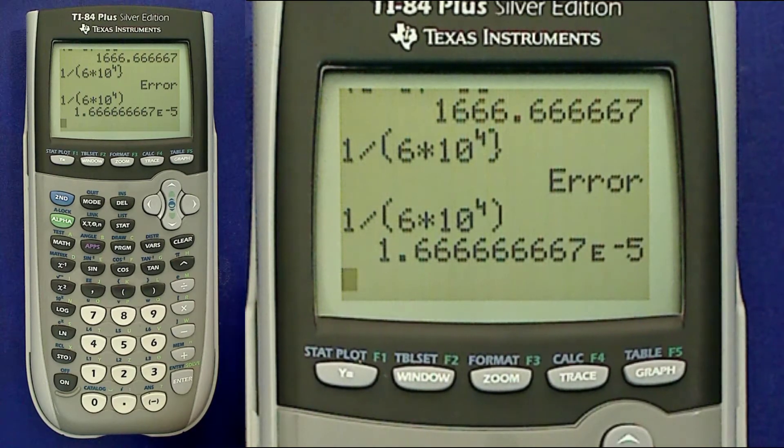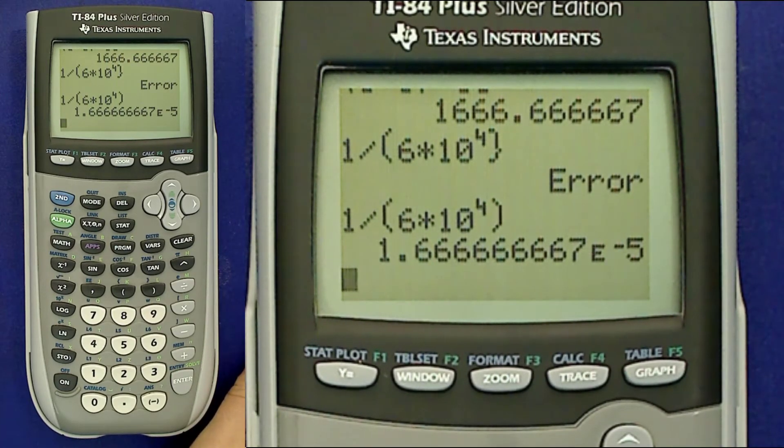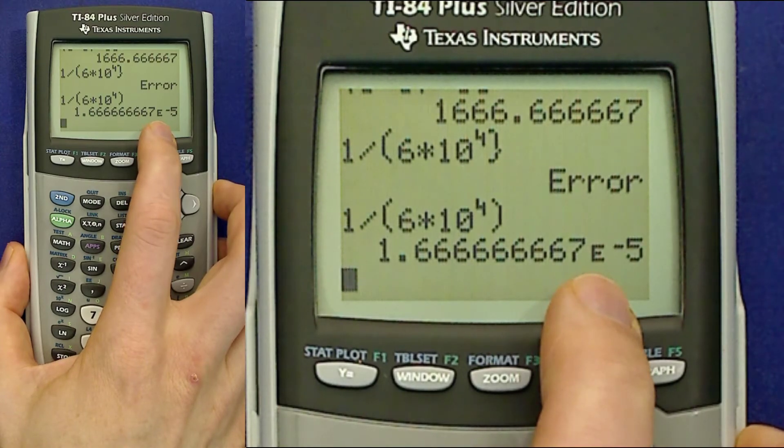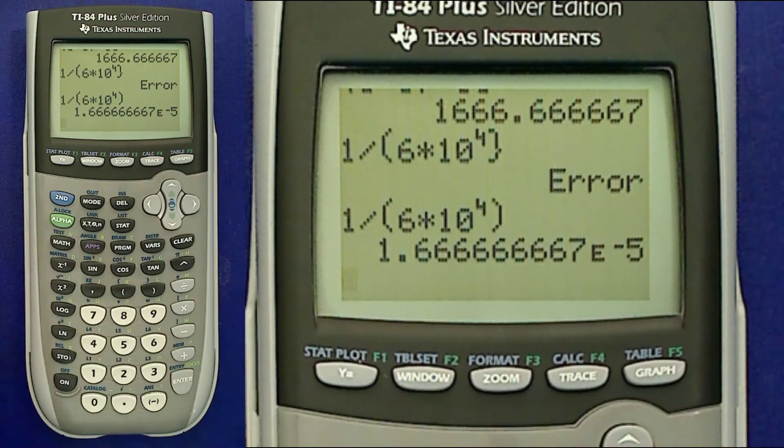Now as to why does the calculator use a little e to indicate a power of 10, I mean surely they could have picked something less confusing. And some brands of calculators actually do have a less confusing notation for this. The reason for this is historical. Back in the 60s and 70s when computers were being developed, this notation was used to represent numbers with a power of 10, particularly in the programming language FORTRAN. And the notation has just kind of stuck with us ever since.